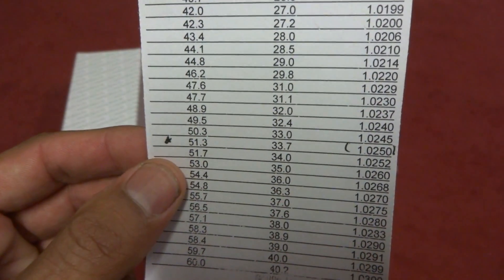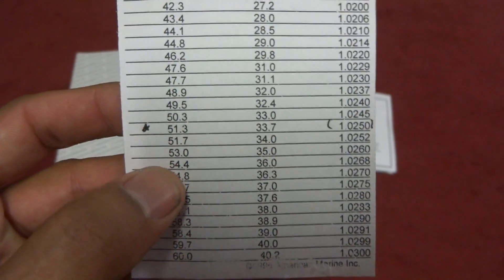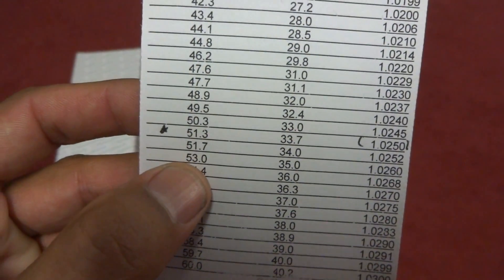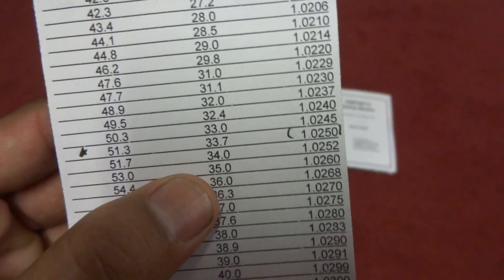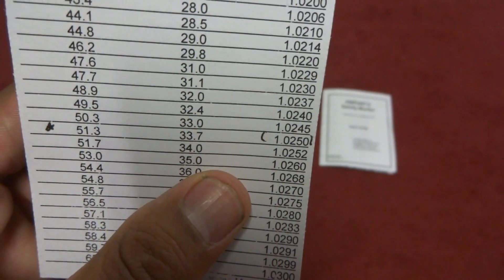So in this case the calibration fluid is target for 53. We look on our chart for 53, look across. 53 also equals 35 parts per thousand which also equals 1.026 specific gravity.